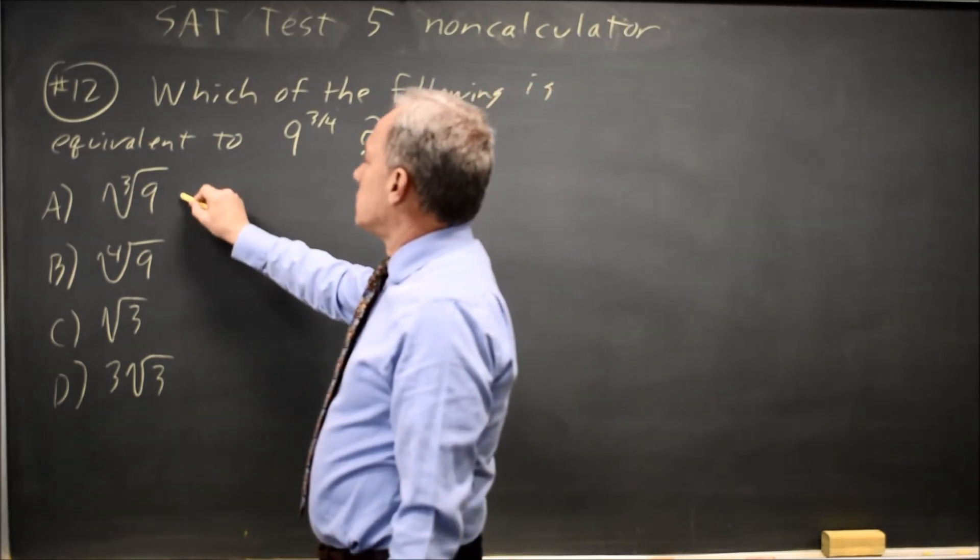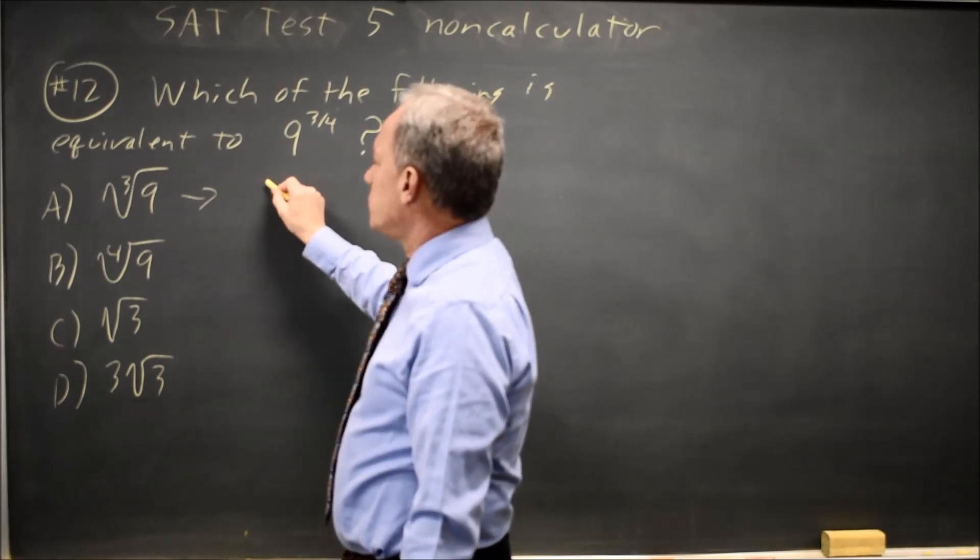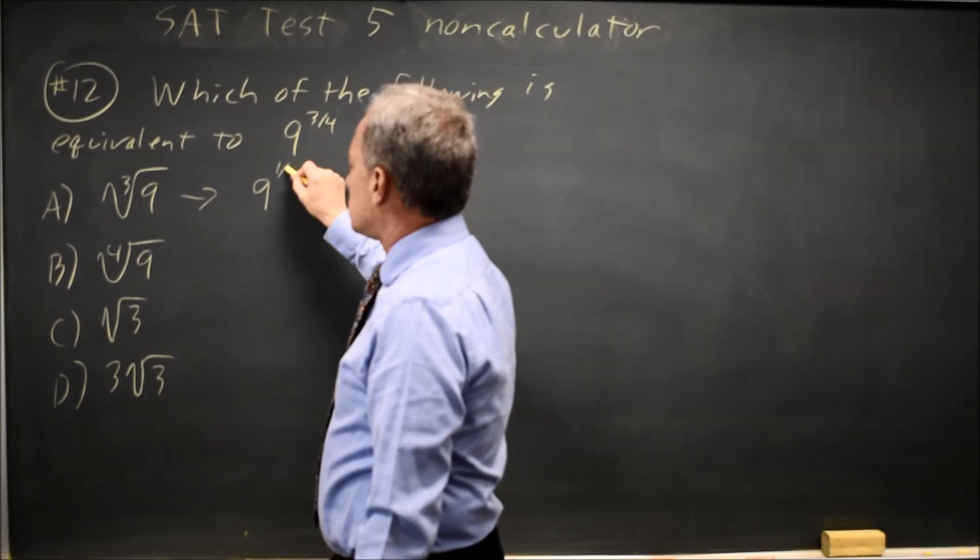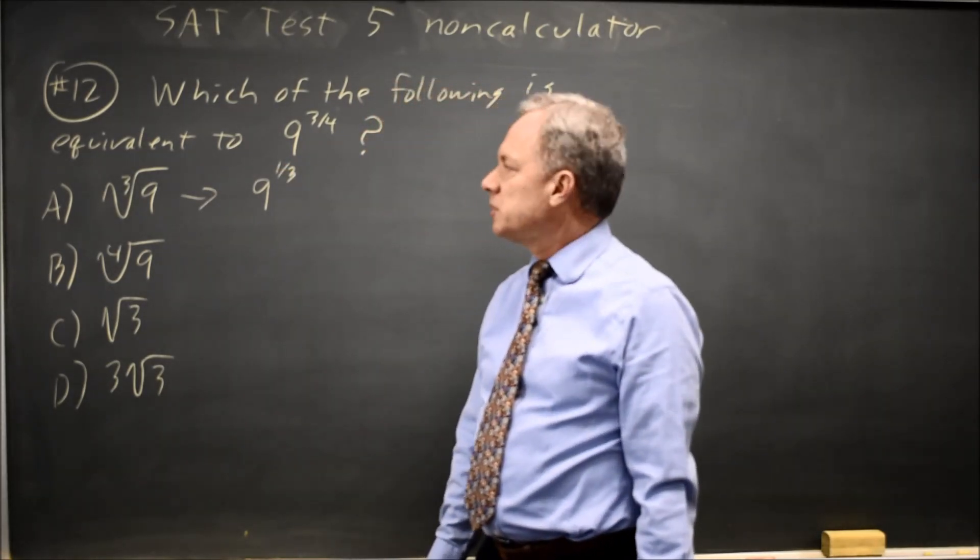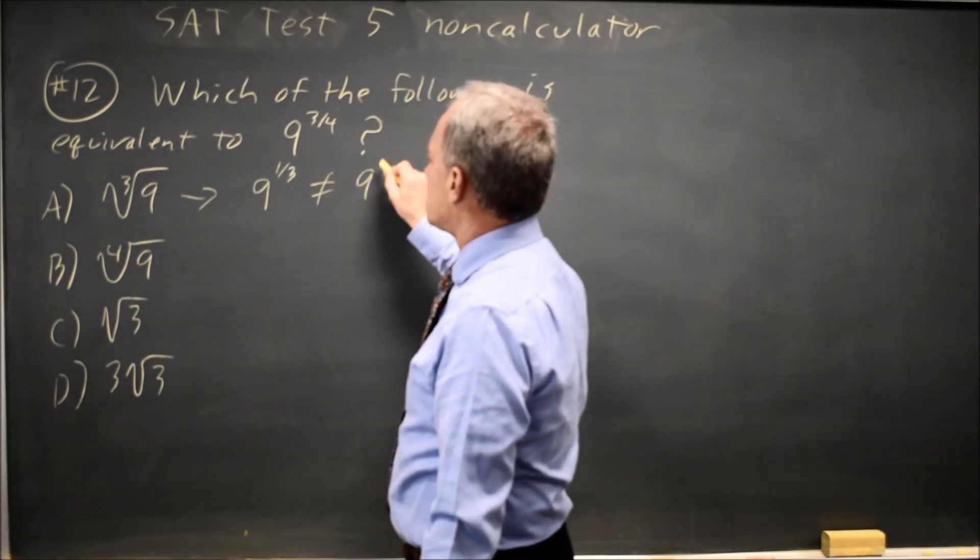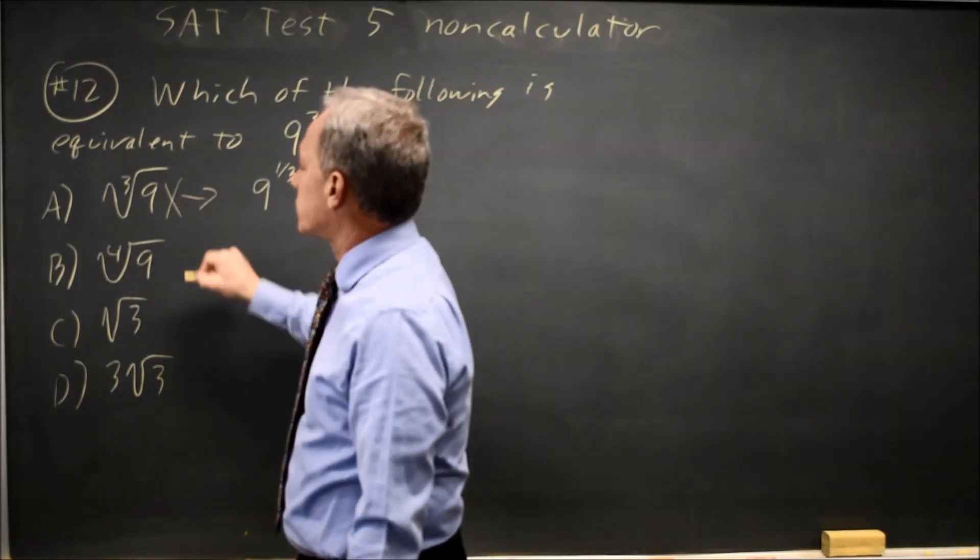So let's write choice A as a rational exponent. A cube root is the same as a fraction power. So cube root is the one-third power, and this is not equal to nine to the three-fourths because one-third is not the same as three-fourths. So that's wrong.